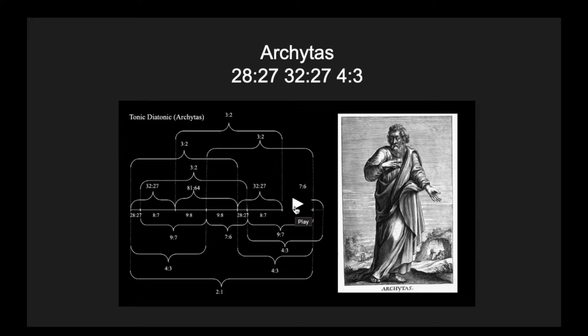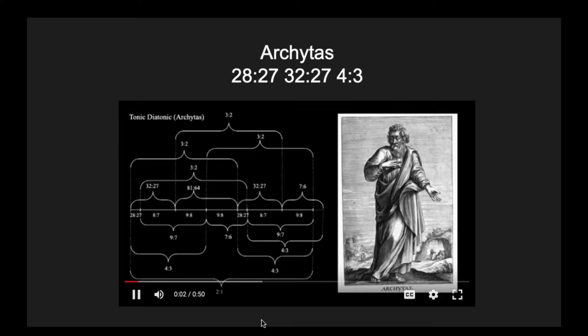Here's an example of Archytas' tuning. Plato's Pythagorean friend Archytas of Tarentum was the most advanced theorist of the classical period. His soft diatonic was a heptatonic seven-note scale built on two tetrachords with the following whole number fractions: 28 over 27, 32 over 27, and 4 over 3. Each attunement avails unique emotional tonality, what Aristotle's student Aristoxenus of Tarentum called shadings, chroma. I'll be presenting on the phenomenological aspects of Archytas and Aristoxenus this summer at a conference in Sicily, which I'm really excited about.